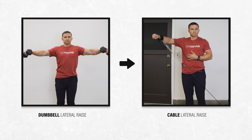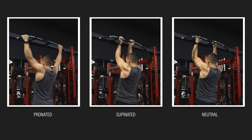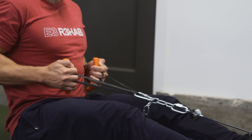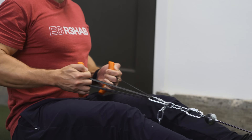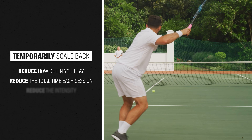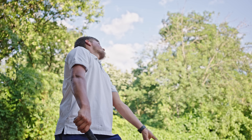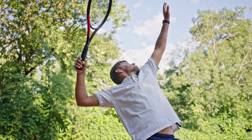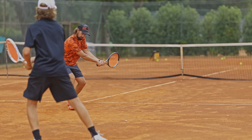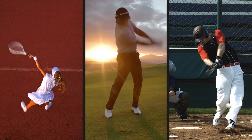If you have pain with dumbbell lateral raises, you can put a cuff around your wrist and do them using the cable column. If a certain position of your forearm is problematic — whether it's pronated, supinated, or neutral — try a different position. You could also try equipment or handles that provide you with more movement variability. If you're a tennis player or any other athlete, reduce how often you play, the total time you play each session, or the intensity at which you play. This can actually be a good time to focus on your technique. Compared to your legs, trunk, and shoulder, your elbow should only be contributing a fraction of your overall power when you're hitting the ball in tennis. Working with a coach might help you discover errors in your technique that are contributing to excessive loading of your elbow — this is true for tennis, golf, and other sports.